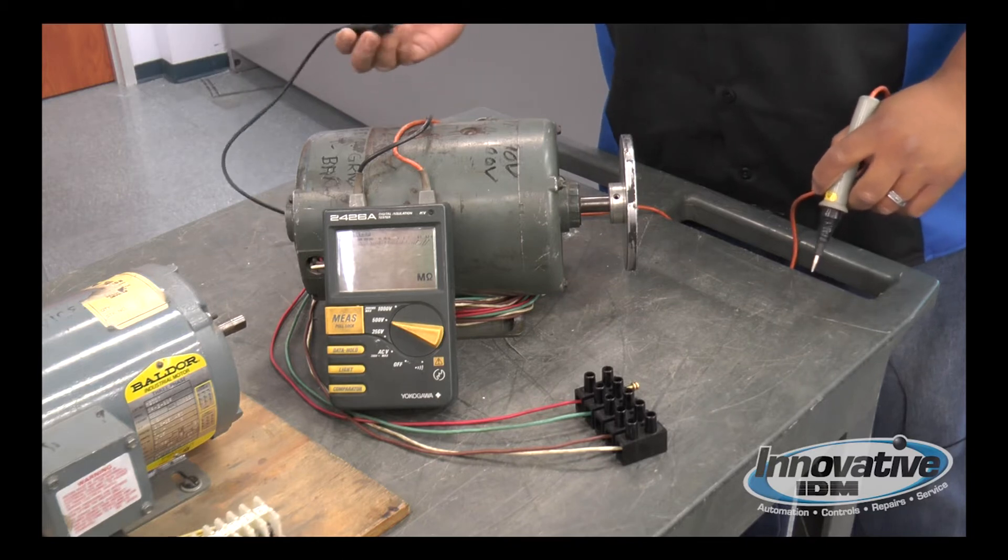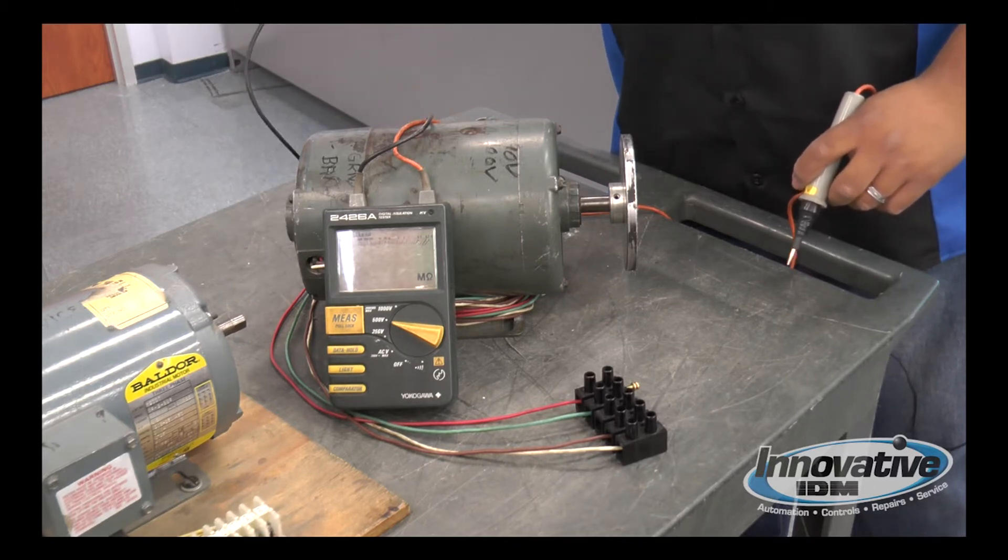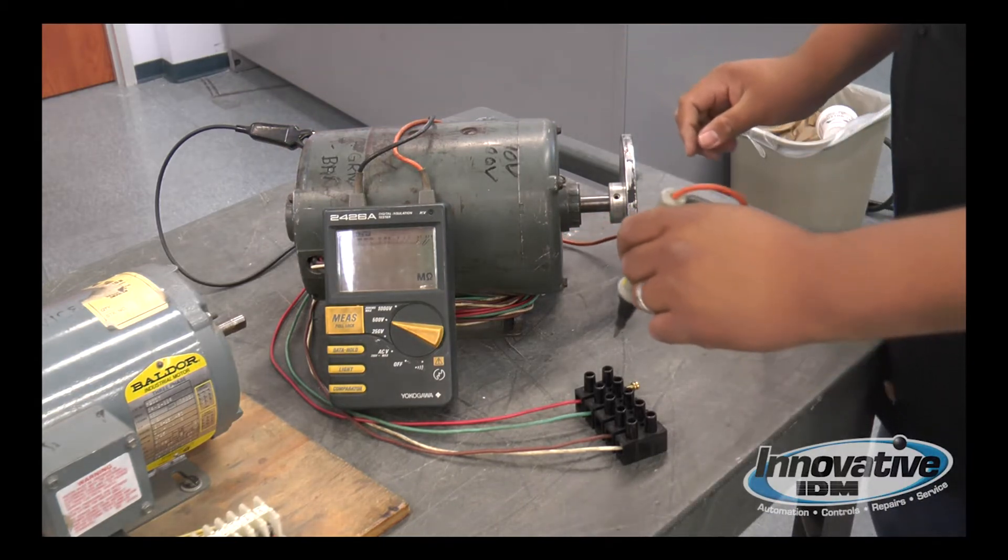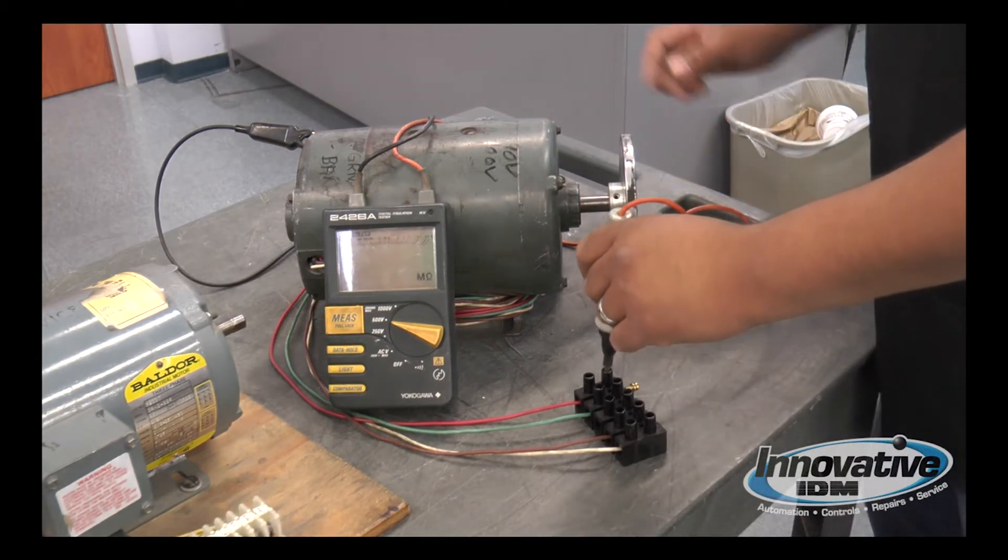First, we're going to start with this DC motor. We're going to hook up the ground cable to the chassis of the motor. We're going to check from our armature to the chassis.